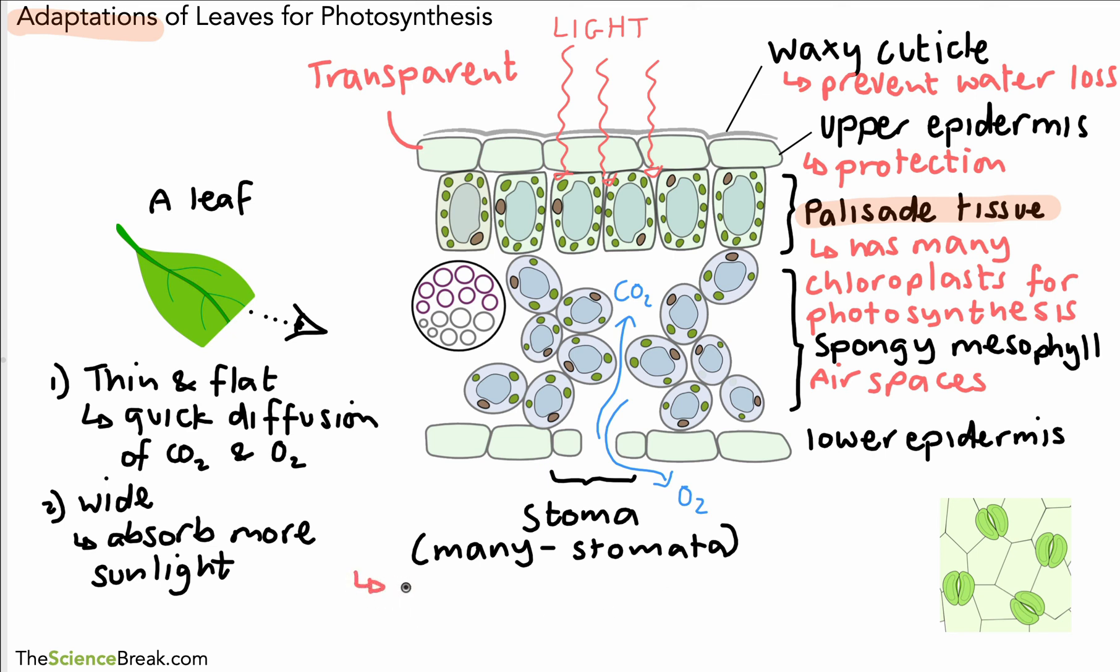Then we have the stomata, and these are pores, which means tiny holes, which can open and close. These can open and close, and this is really important because they can allow gas exchange to happen. So the fact that they can open and close controls the amount of oxygen and carbon dioxide going in and out of the leaf.